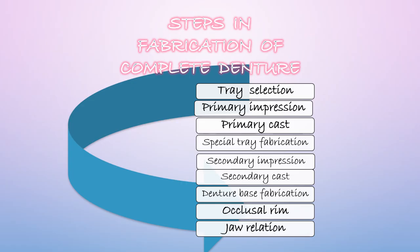The complete denture workflow begins with proper tray selection, then making a primary impression, fabrication of the primary cast, and using that to fabricate a special or custom tray. This custom tray is used to make a secondary impression from which a master cast is made. On the secondary cast, the denture base is made and the occlusal rim is fabricated.